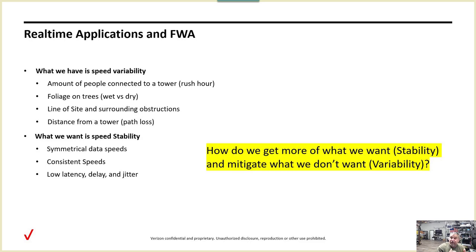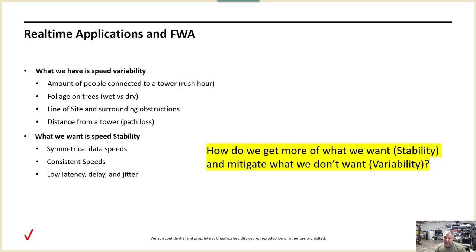That causes a little heartache with real-time communications, but all is not lost because we can do some things to mitigate this. What we want in real-time communications is stability. We need symmetrical data speeds. FWA wireless is not symmetrical in its nature — we have big towers that can blast out to everybody in a sector and send a lot of data.